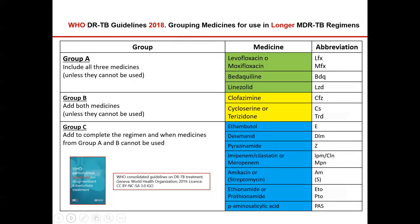The medicines we are currently using are in Group A and Group B. Our standard MDR-RR regimen has levofloxacin, bedaquiline, linezolid, clofazimine, and cycloserine. In instances where you have challenges using one or more of those drugs, we bring in individualized regimens and add medicines from Group C. Please note that these medicines have been put in order of preference — the more preferred medicines are in Group A and Group B, and the less preferred are in Group C.